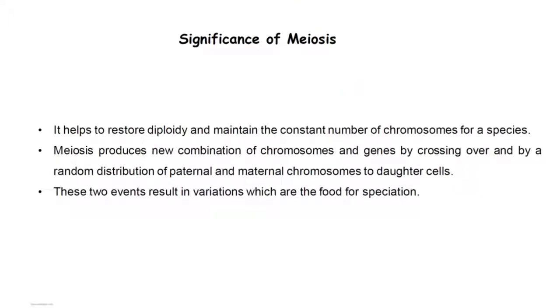The significance of meiosis: it helps to restore diploidy and maintain the constant number of chromosomes for a species. Meiosis produces new combinations of chromosomes and genes by crossing over and by random distribution of paternal and maternal chromosomes to daughter cells. These two events result in variation, which is the fuel for speciation. Thank you, I hope you liked this video — do not forget to subscribe.